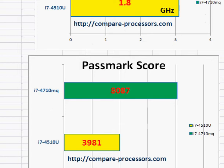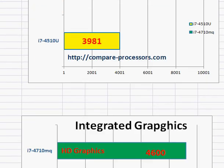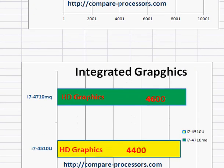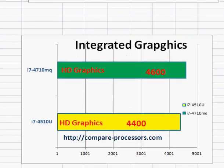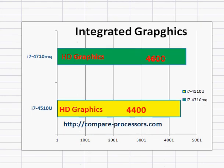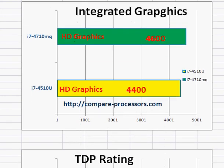So if you are looking for a performance notebook processor, your choice is obviously the i7-4710MQ. Additionally, the i7-4710MQ has better integrated graphics.